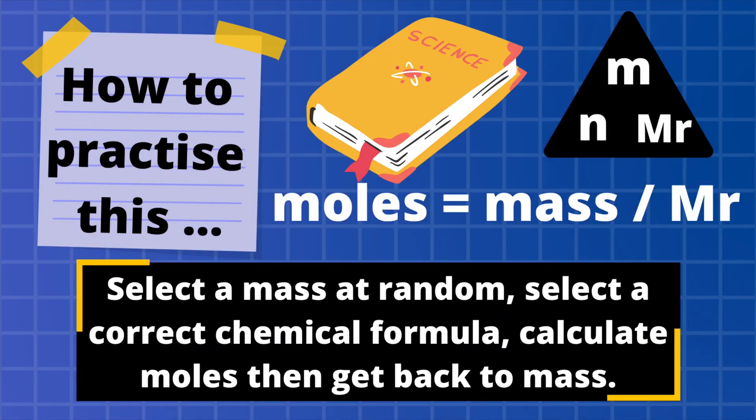To practice this, select a mass at random — for example, 300 grams — and then select a correct chemical formula. For inspiration on chemical formulae, check out volume 1 of our online tutorial series. For example, nitric acid is HNO₃, so to calculate moles you'd just do 300 divided by the MR of HNO₃. You could then multiply the mole value back by the MR to check you return to the original mass value.